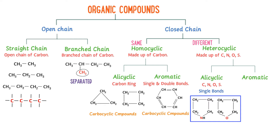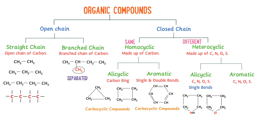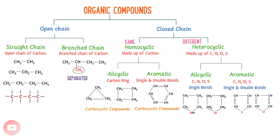Secondly, heterocyclic aromatic organic compounds are those compounds which contain one or more atoms like nitrogen, oxygen, or sulfur in their rings but have alternate single and double bonds. For example, thiophene and furan. Remember that heterocyclic organic compounds contain either nitrogen, sulfur, or oxygen in their respective rings with alternate single and double bonds.